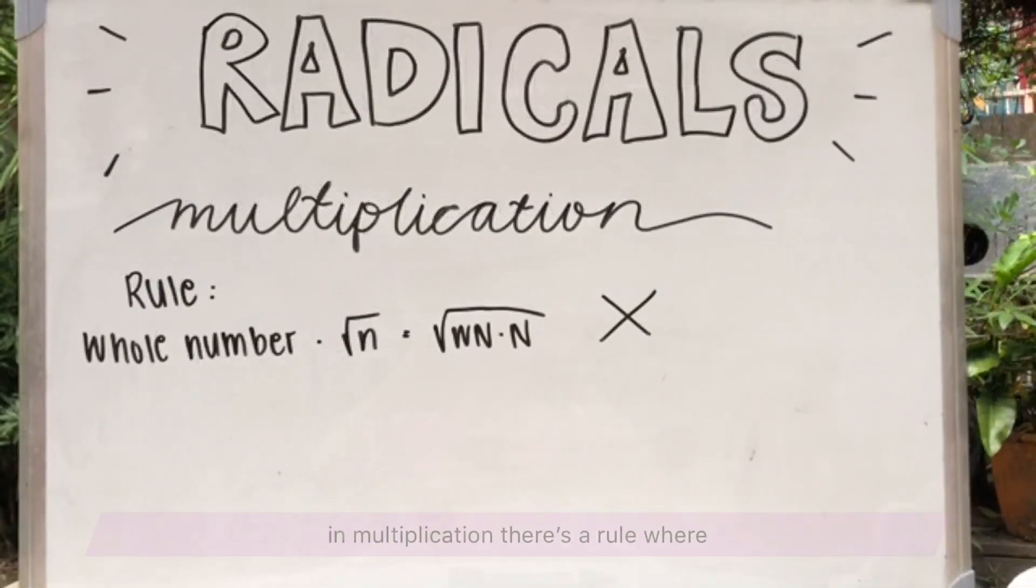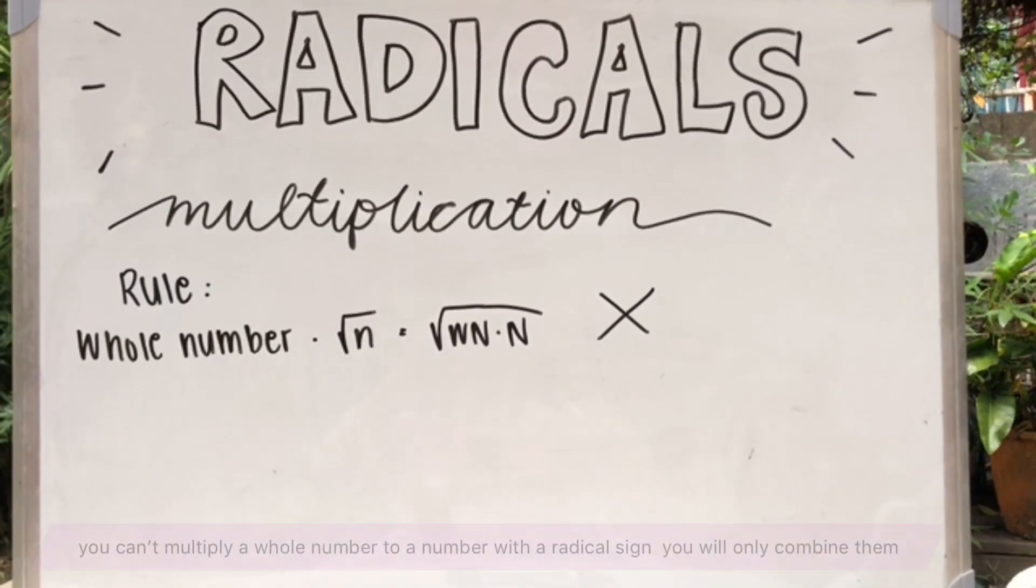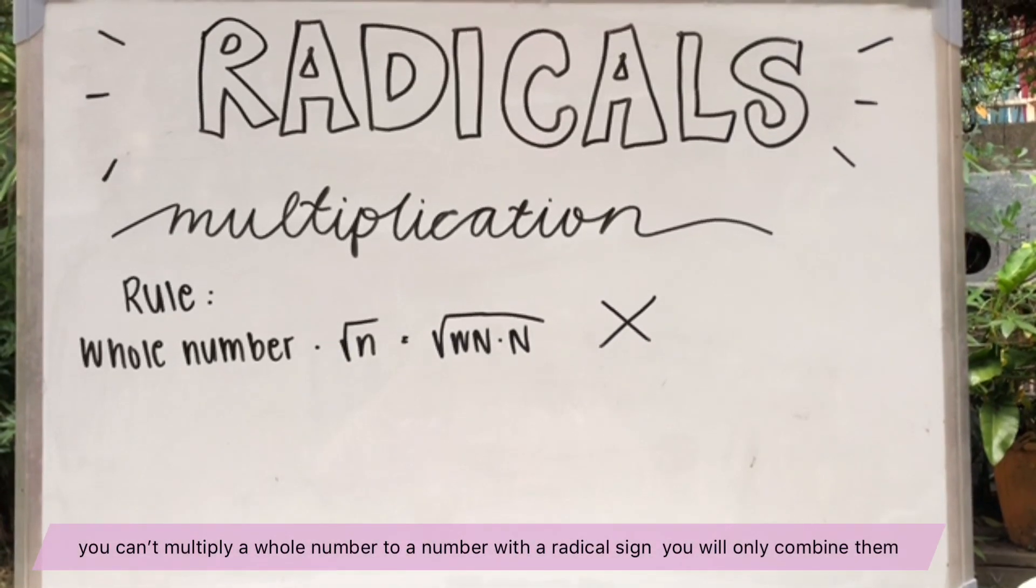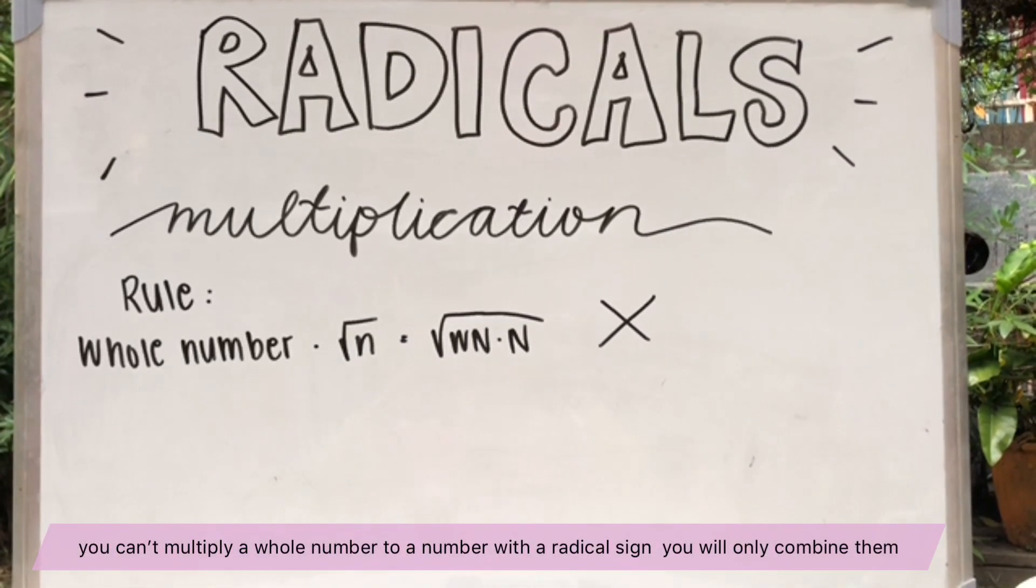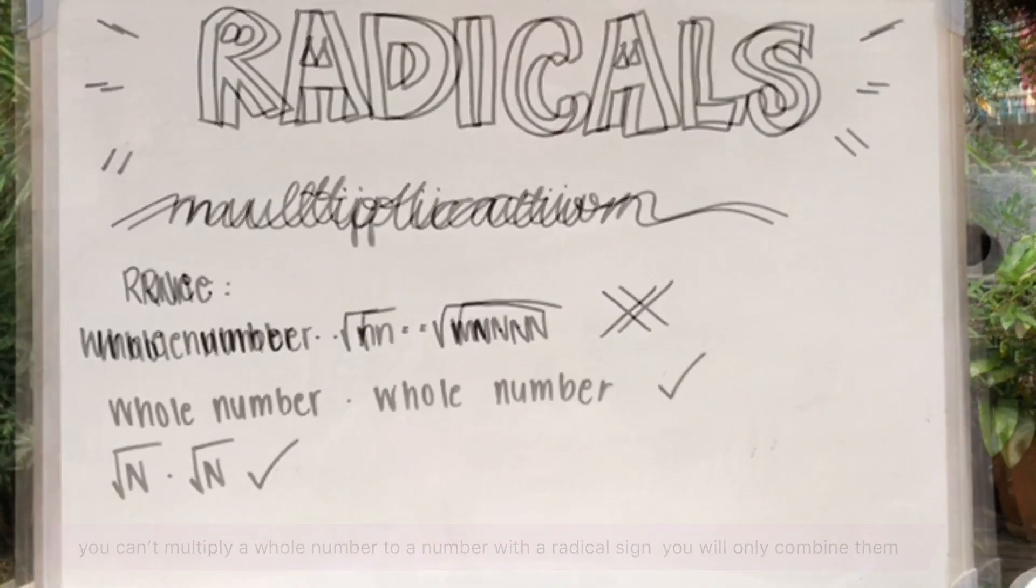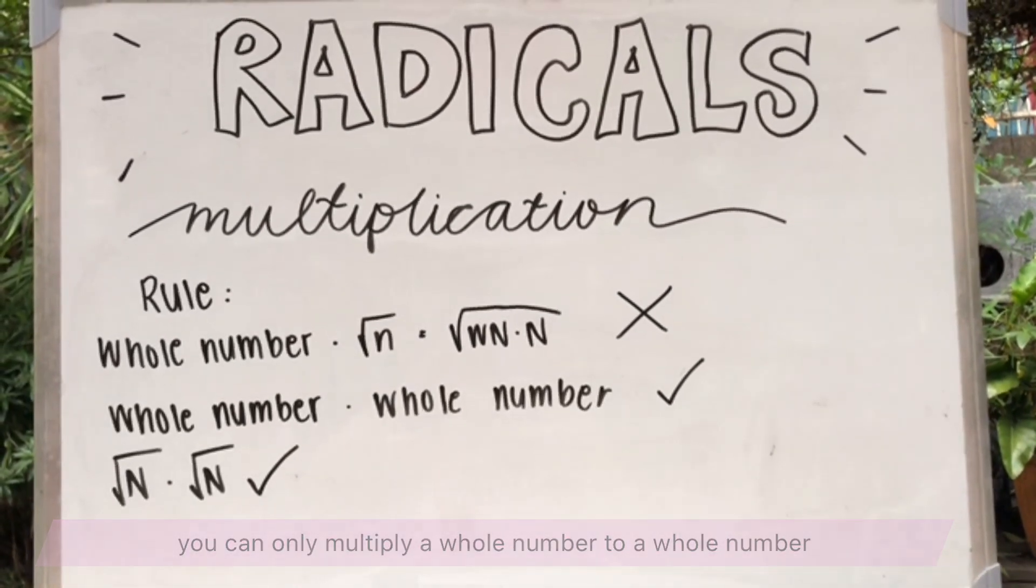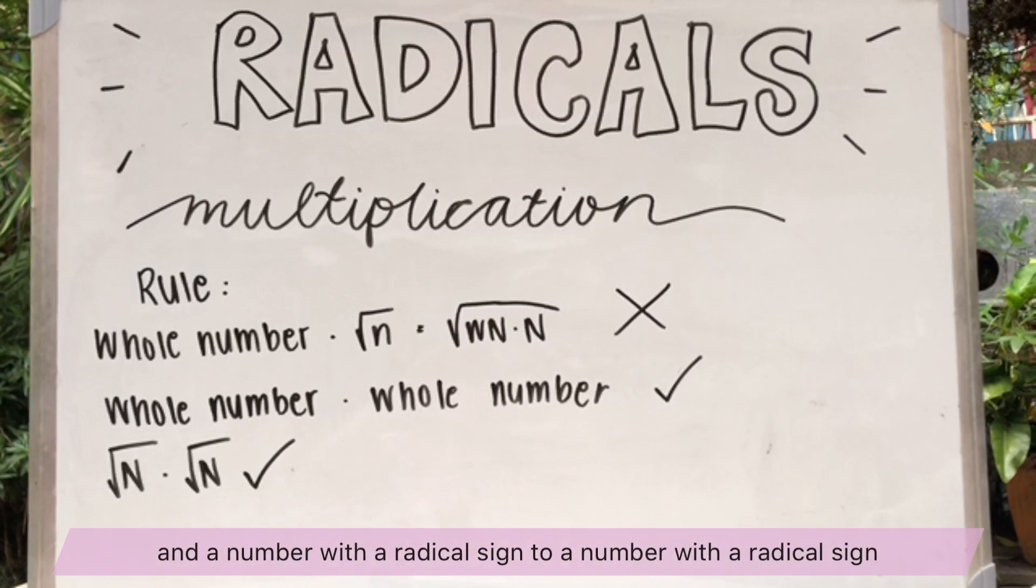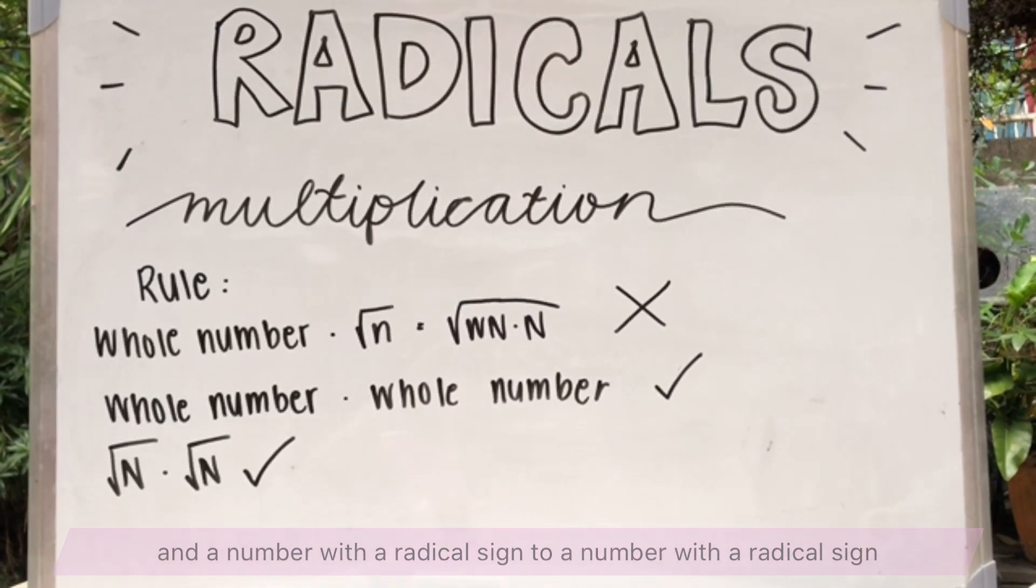So, in multiplication, there's a rule where you can't multiply a whole number to a number with a radical sign. You will only combine them. You can only multiply a whole number to a whole number and a number with a radical sign to a number with a radical sign.